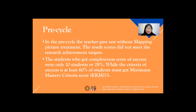Pre-cycle. In the pre-cycle, the teacher gave tests without mapping picture treatment. The result scores did not meet the research achievement targets. The students who got a completeness score of success were only 10 students or 28%, while the criteria of success requires at least 60% of students to reach the minimum mastery criteria score KKM 75.